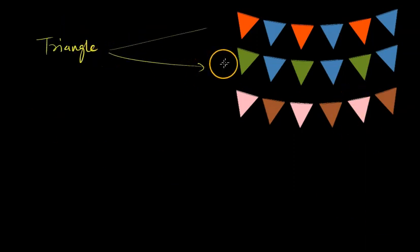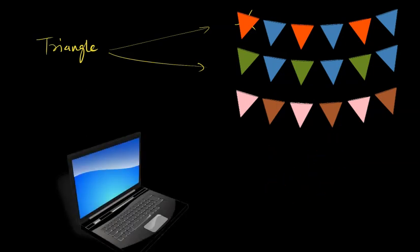So here you see the triangles with three different sides. So these are flags, which is one of the examples of a triangle. You also see quadrilaterals as well.